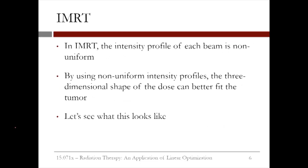In IMRT, the intensity profile of each beam is non-uniform. Before IMRT, each beam had to have the same intensity, so the tumor could not be targeted very well. But by using non-uniform intensity profiles, the radiation dose can better fit the tumor.